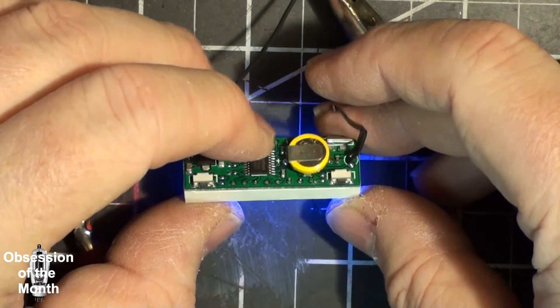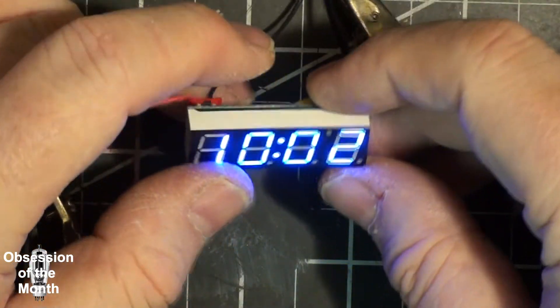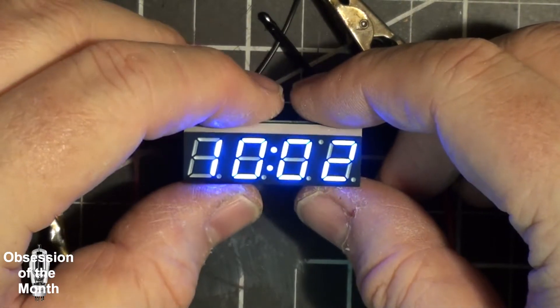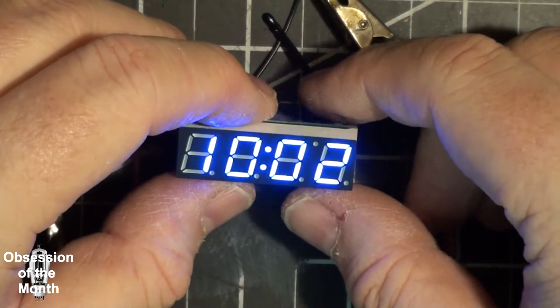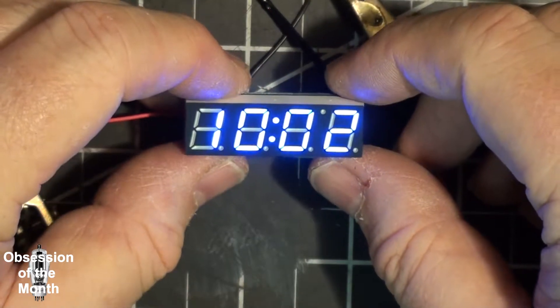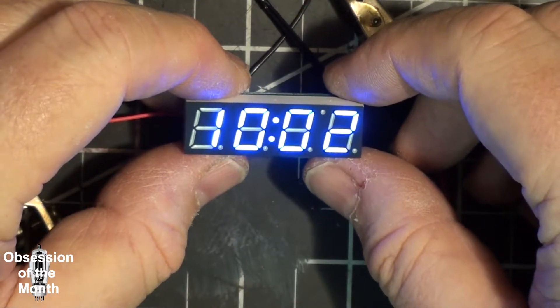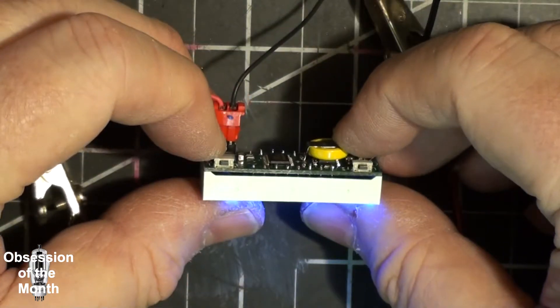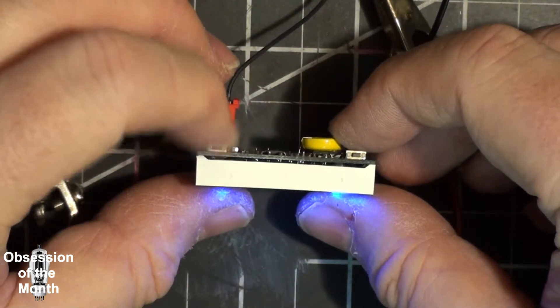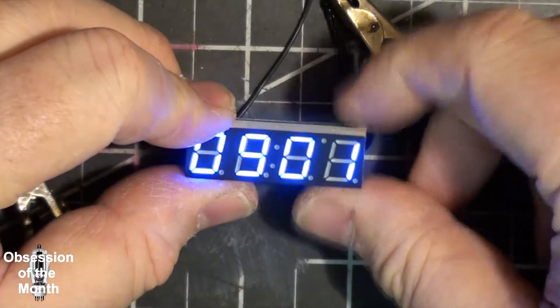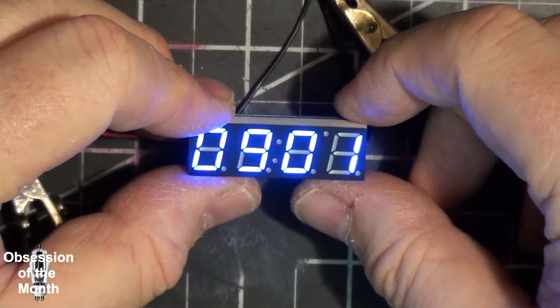The other annoying thing about this is it only tells temperature in Celsius. It will tell you the date and the voltage. So you can see that it's 10.02. There's two buttons here - this one is for setting and this one is for changing.